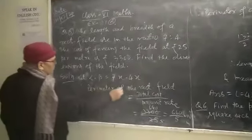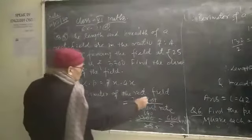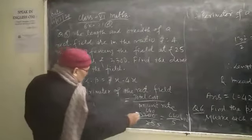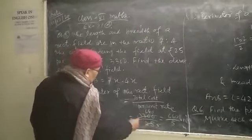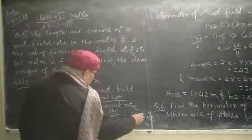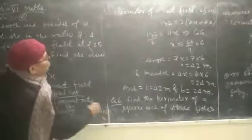Therefore, perimeter of rectangular field is equal to total cost divided by per unit rate. Therefore, 3300 divided by 25, after the division it will be equal to 660 upon 5, which will be equal to 132.